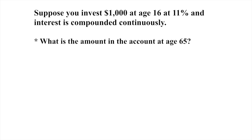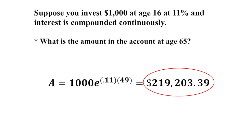Going back to our original question: invest $1,000 at age 16 at 11% compounded continuously. Plug it into the calculator. The answer is approximately $219,000 at age 65 — almost 49 years. A thousand dollars turns into two hundred nineteen thousand just by leaving it alone. This is how wealth is built: allow money to sit, grow exponentially, and never touch it.